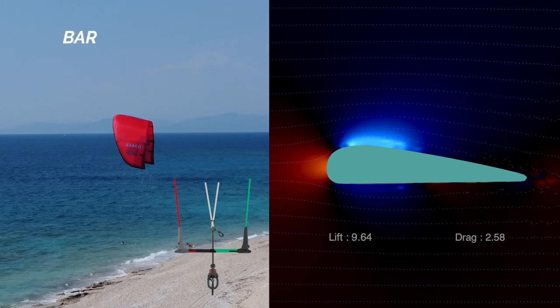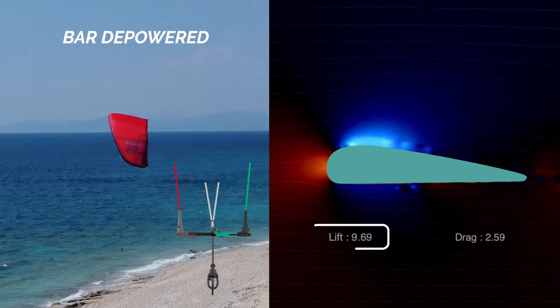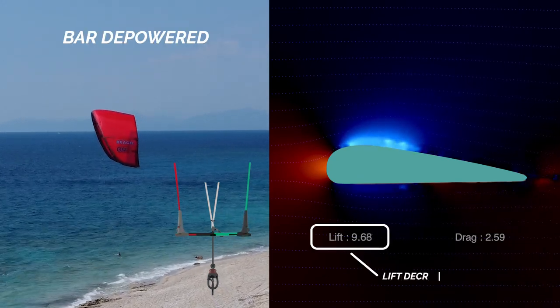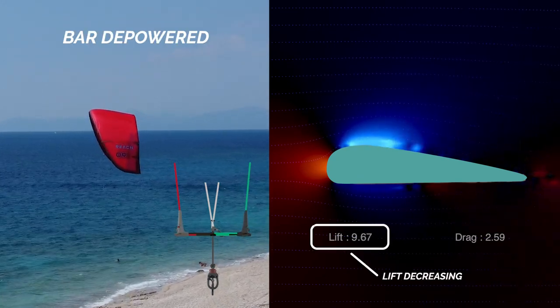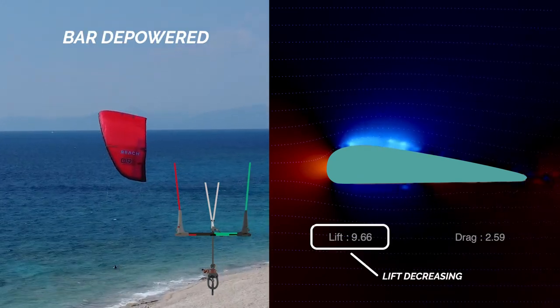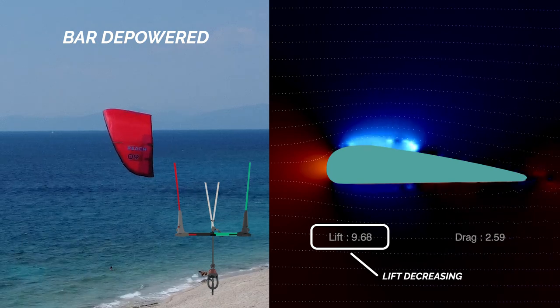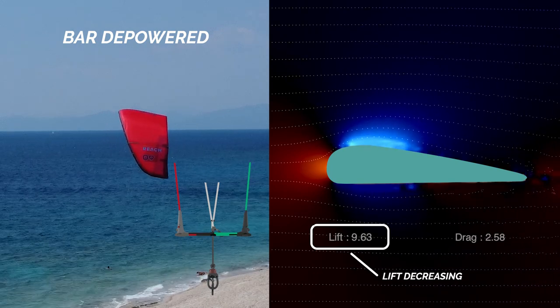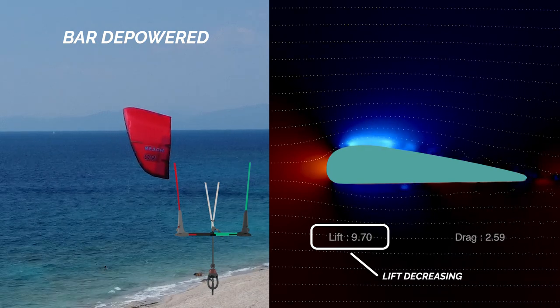When we completely depower the bar, the canopy above the kite is quite flat, so it creates just enough lift for the kite to fly and remain stable.